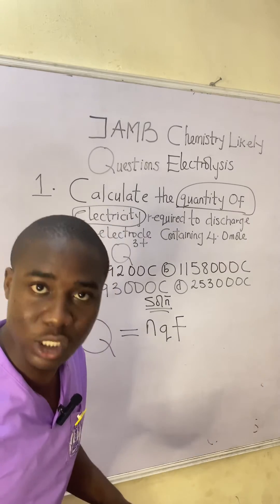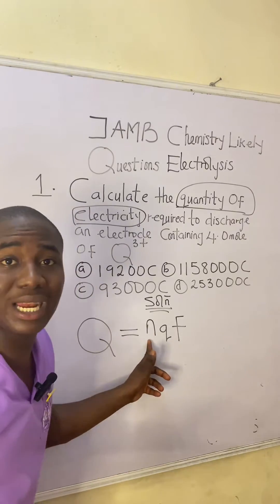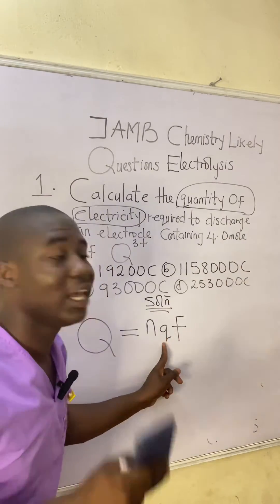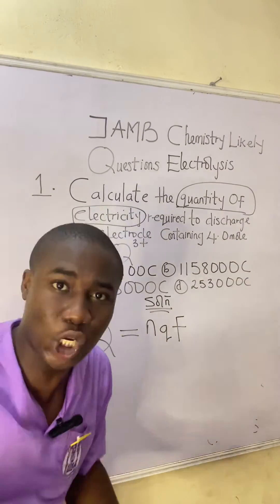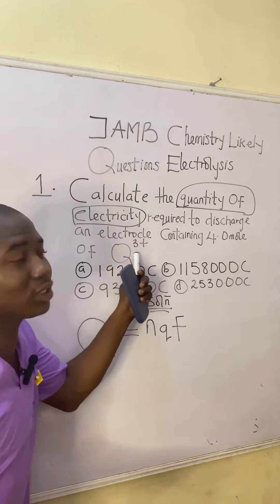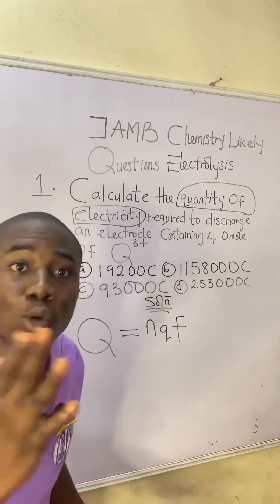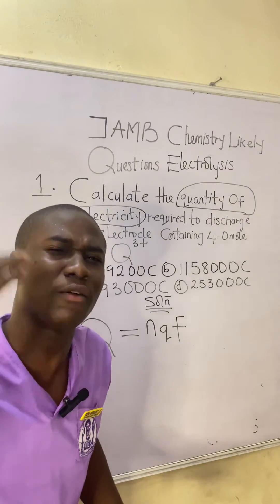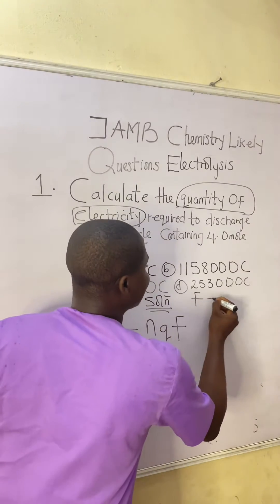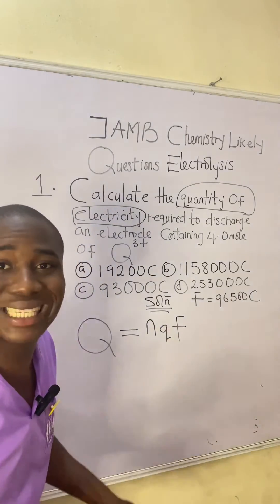The formula is Q = nqF, where Q is the quantity of electricity we are looking for; n is the number of moles; the small letter q is the charge of the element, which is gotten from the ion notation — for Cu³⁺ the charge is 3; and F is a constant called Faraday's constant, which equals 96,500 coulombs.